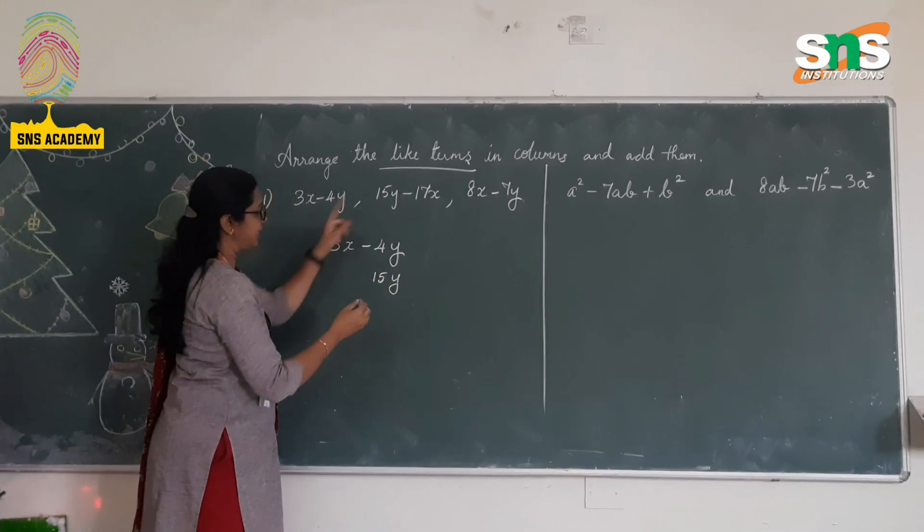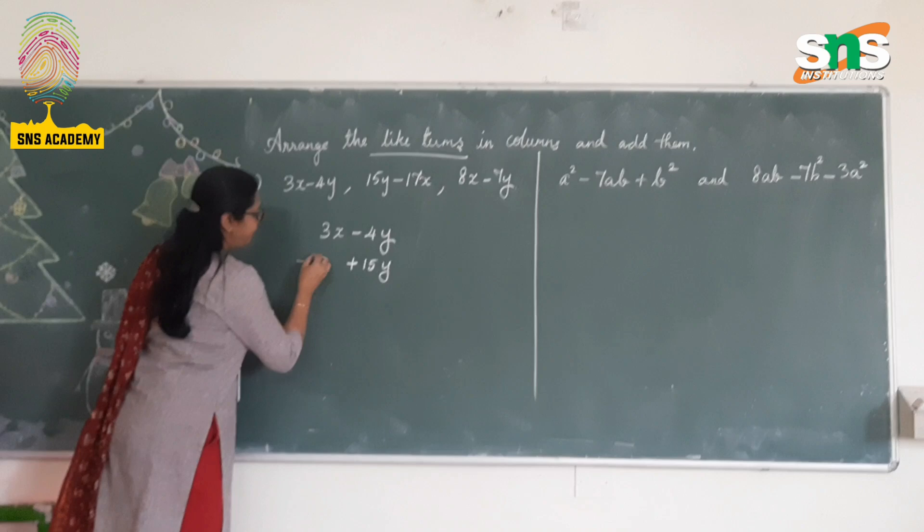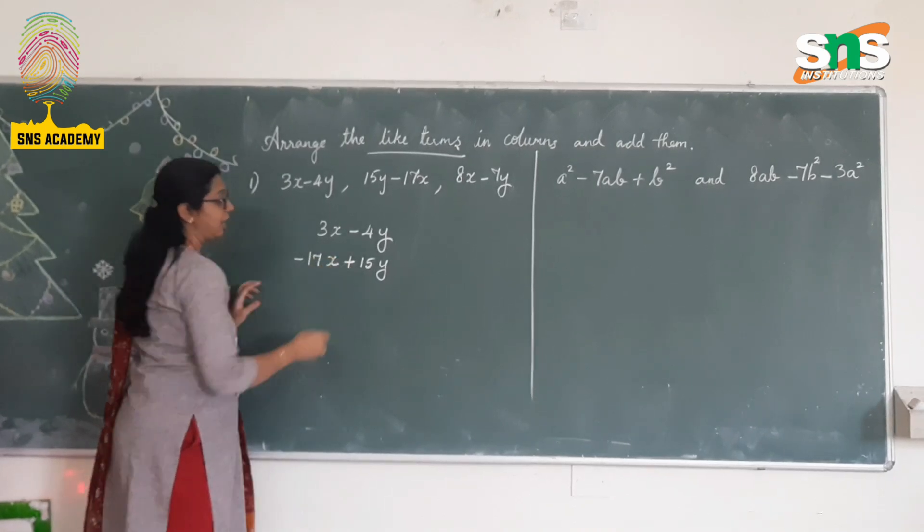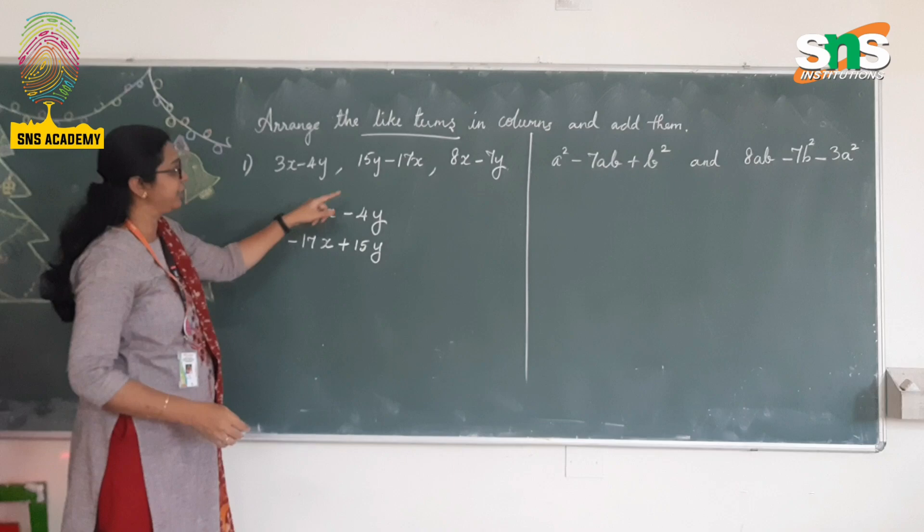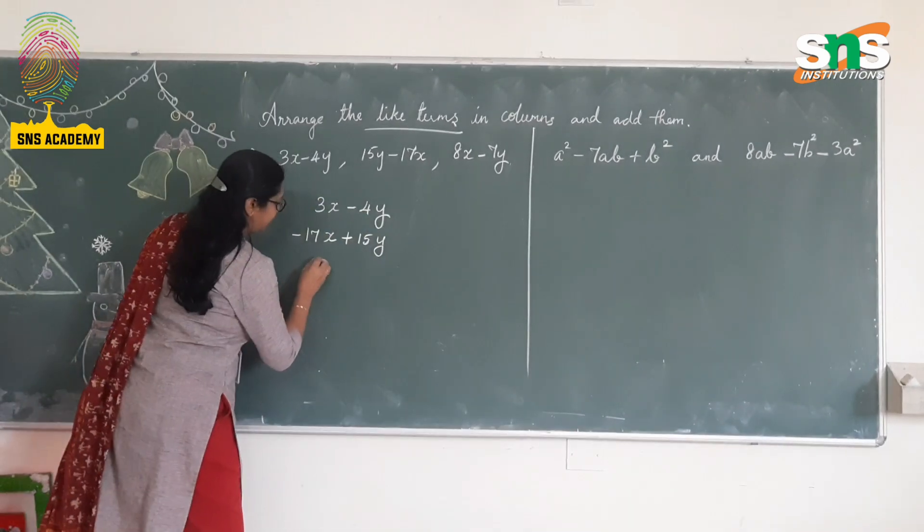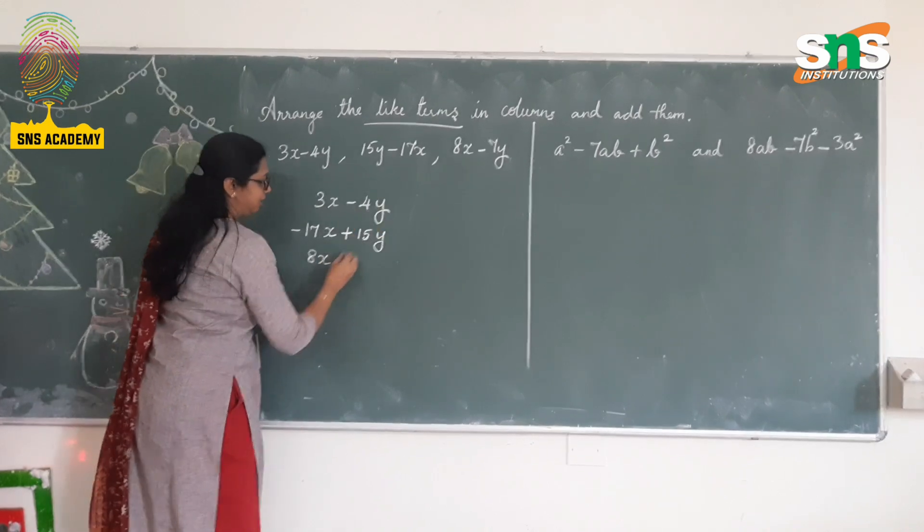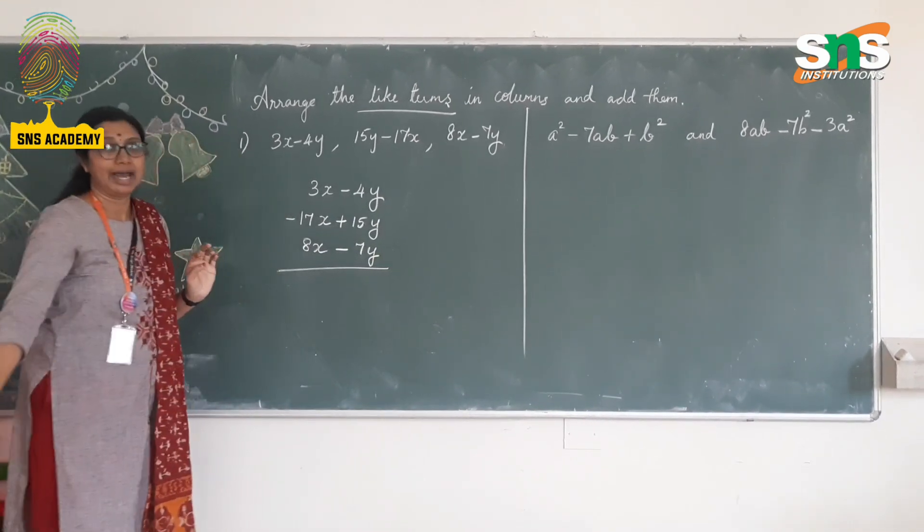So 15y, the sign is positive. Minus 17x, so negative 17x. You have to write it according to the terms. You have to arrange them in columns according to the like terms. And the last expression is 8x - 7y. So 8x will come under this and minus 7y. Now we have to add. Addition is very similar as you do it usually.